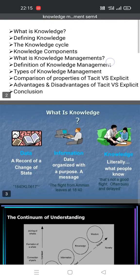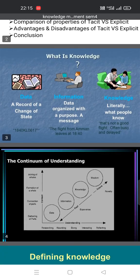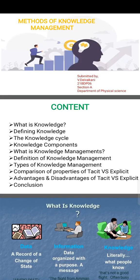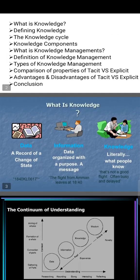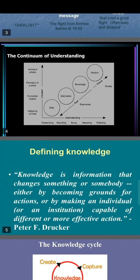What is knowledge? Data is a record of a change of state. Information is data organized with a purpose or message. Knowledge is literally what people know. This is the continuity of understanding: data, information, knowledge, and wisdom.